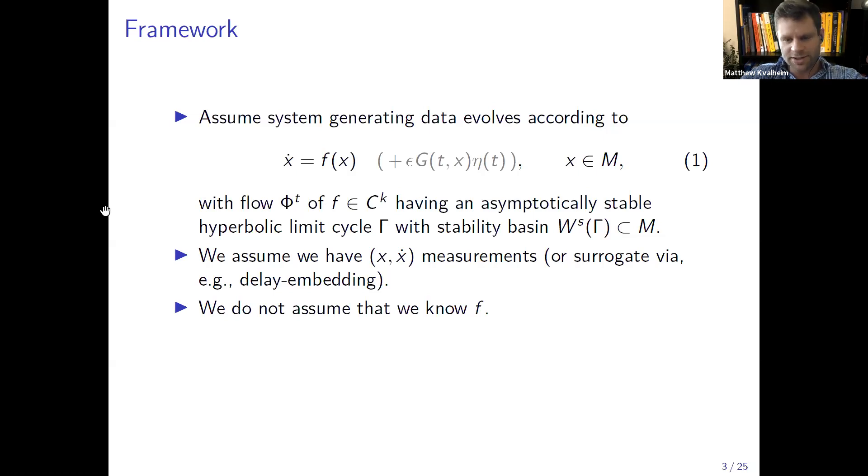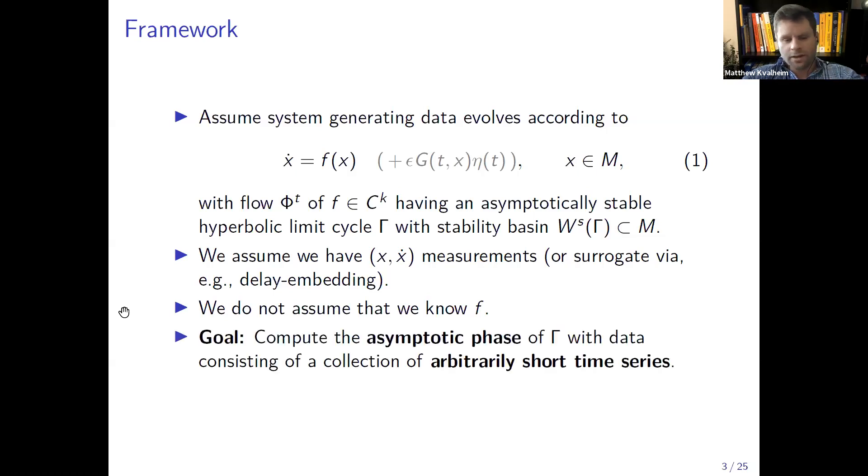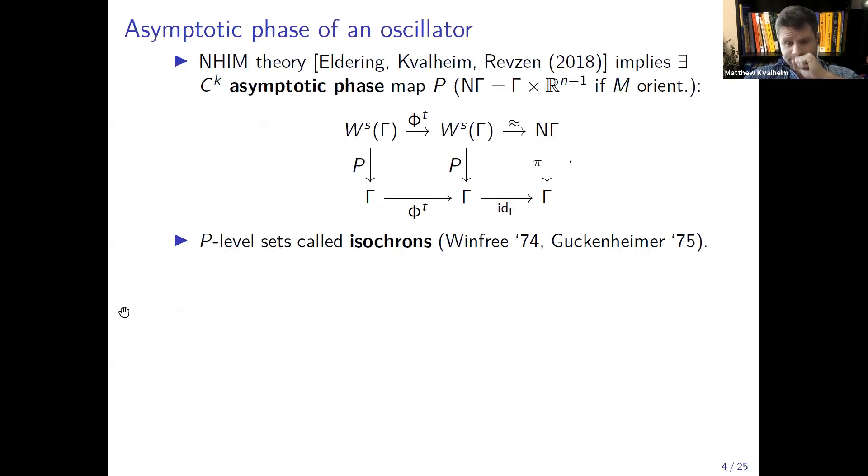What we assume is that we have x, x dot measurements, or really just x measurements because we just take numerical differences to estimate velocity, or we at least assume that we have some observable from which through a delay embedding we can estimate x. But key for us is that we do not assume that we know f. Now our goal is to compute the asymptotic phase of the limit cycle with data consisting of a collection of arbitrarily short time series and without assuming that we know the equations of motion.